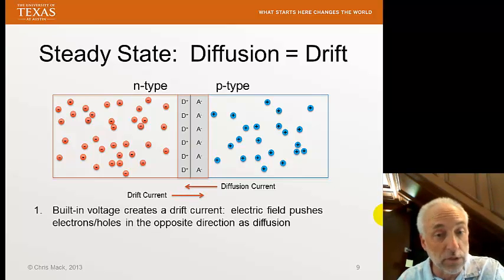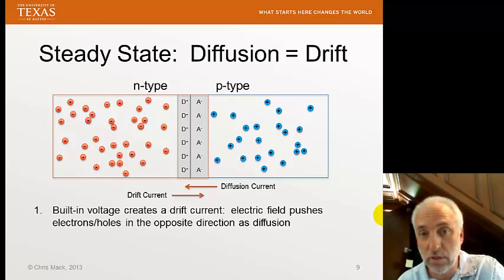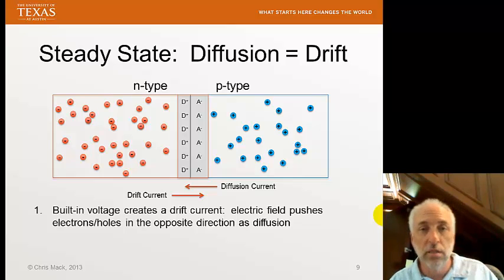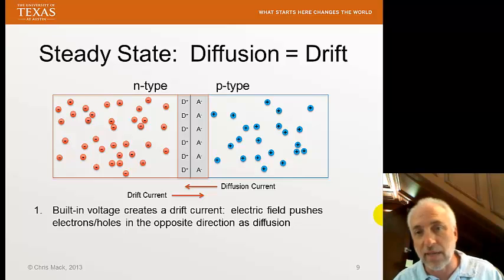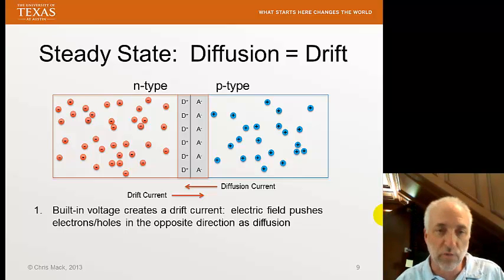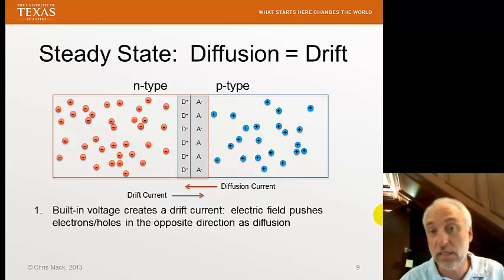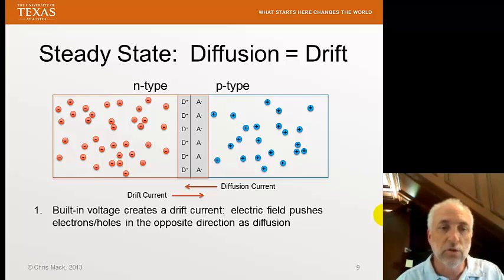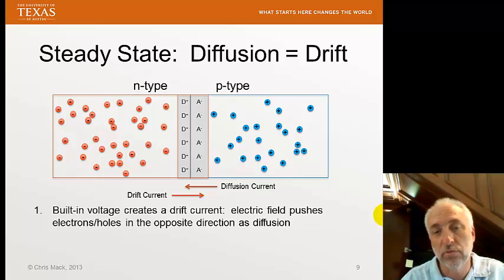We also have this built-in voltage, which causes a current — Ohm's law, V equals IR. An electron in the depletion region is pushed away from the negatively charged ionized acceptors and toward the positively charged ionized donors. A hole is pushed toward the acceptors and away from the donors. So the built-in voltage creates a drift current, which is in the opposite direction from the diffusion current.